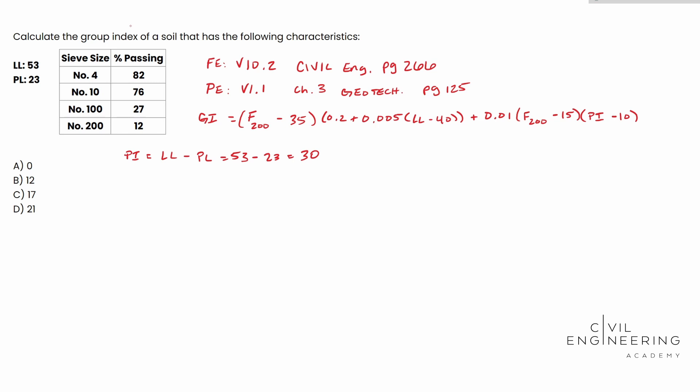F200 is going to be the percent passing. So we're going to use that 12 right there. And we're given everything else, the liquid limit, we can plug that in. So let's go ahead and plug it in. And hey, while I've got you here, if you've already enrolled in one of the review courses at civilengineeringacademy.com, keep it up. You can do this. If you haven't, I encourage you to go to civilengineeringacademy.com to check out some awesome practice exams and resources to help you pass your FE and PE exams the first time.